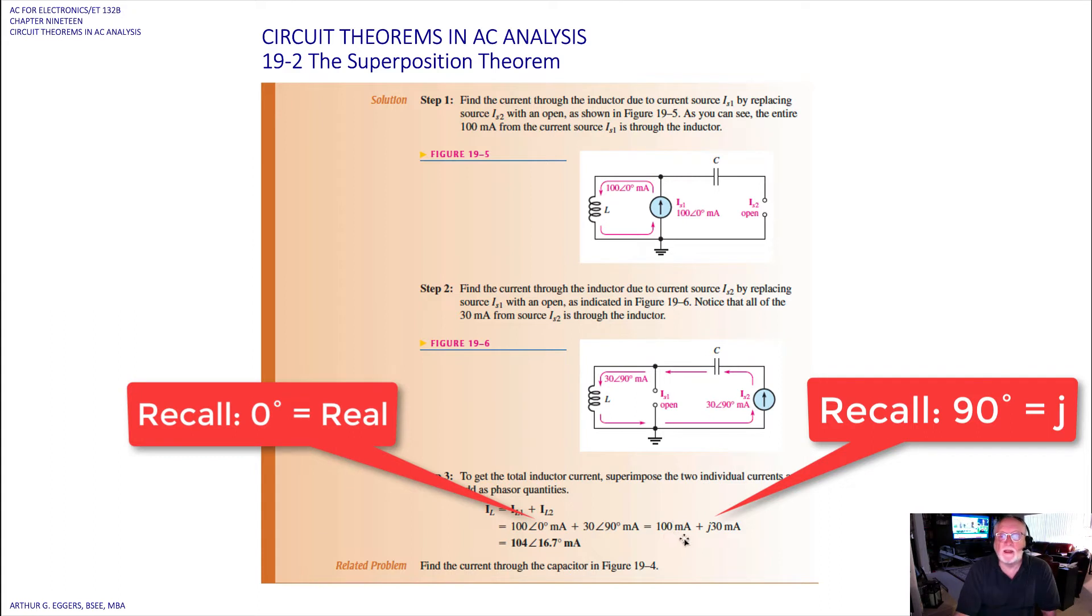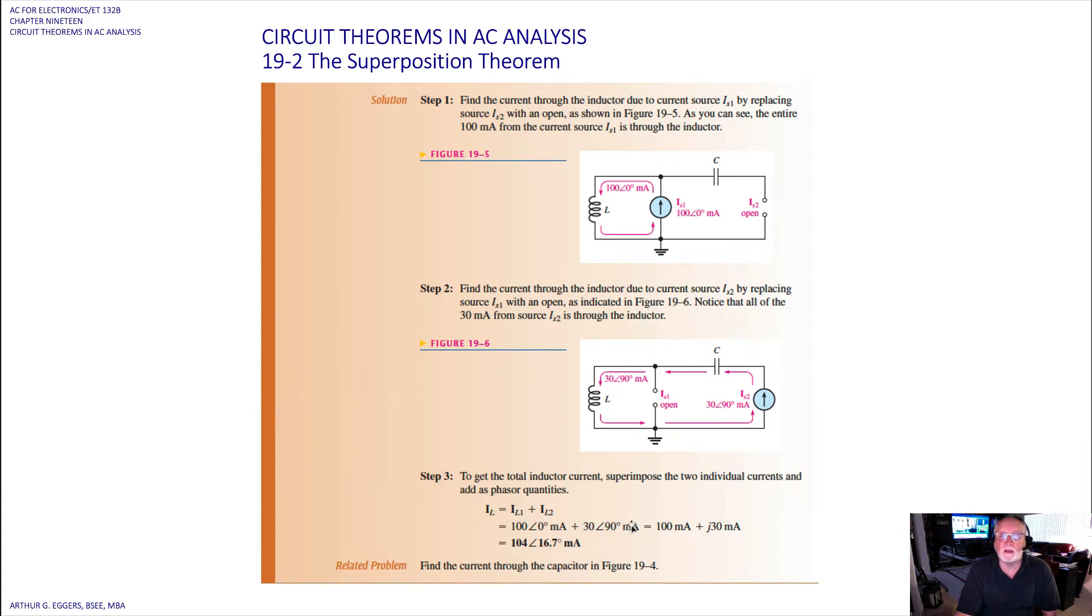So we have to convert them to rectangular. By making them rectangular, since we have 100 with no angle, this simply becomes 100 milliamps. Here, since we have 90 degrees, remember 90 degrees is telling us that we just simply substitute the J. So it becomes J30 milliamps.